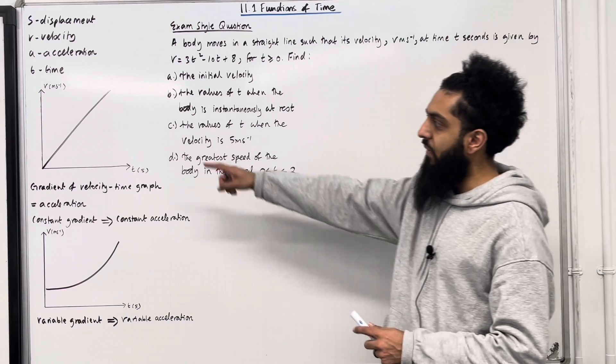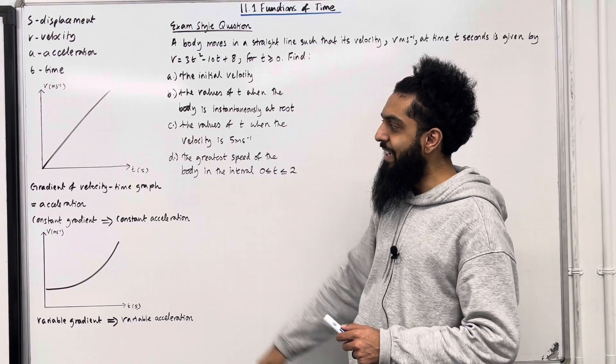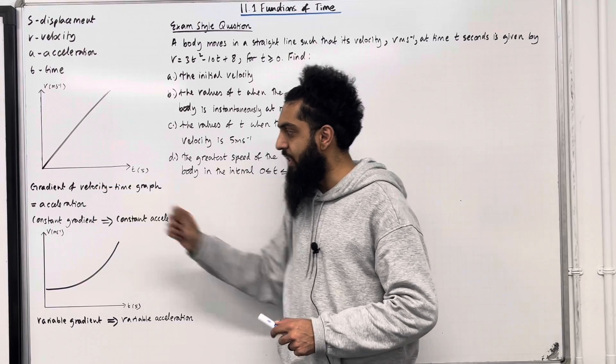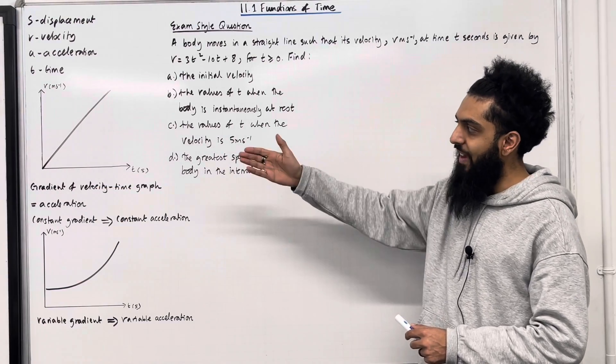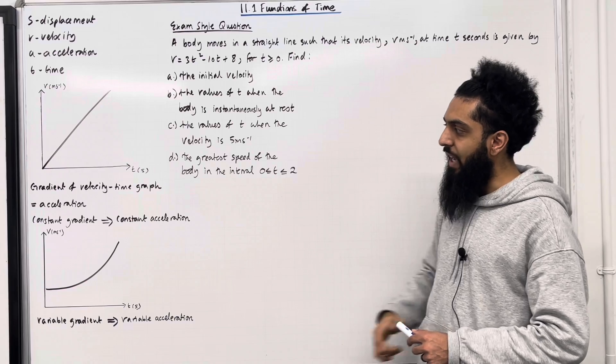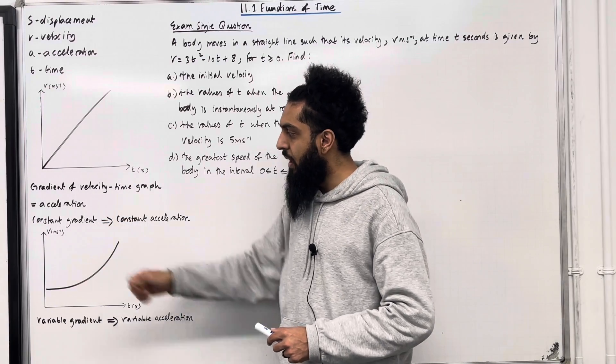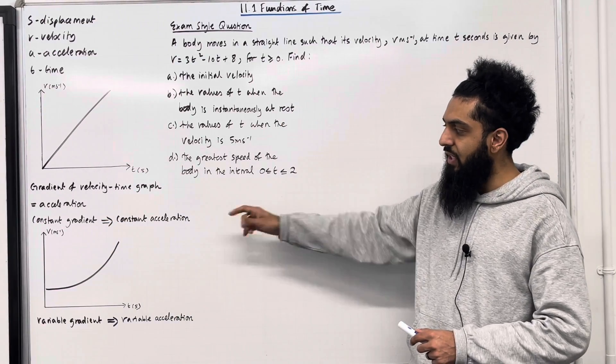Consider the following velocity-time graph. Ladies and gents, the gradient of a velocity-time graph represents acceleration. We have a linear graph, and so we have a constant gradient. This implies that there is a constant acceleration.